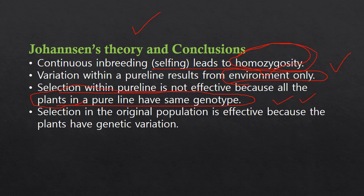Selection within a pure line is not effective because all plants in a pure line have the same genotype — this is where its limitation comes from. Selection in the original population is effective because plants have genetic variation. After prolonged selfing, they lose that genetic variation and selection becomes ineffective.